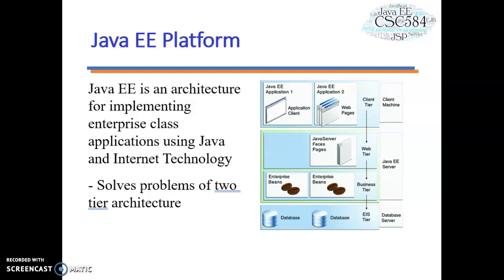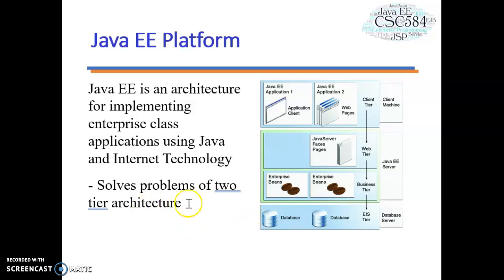The features that make enterprise applications powerful, like security and reliability, often make these applications complex. The Java EE platform is designed to reduce the complexity of enterprise application development by providing a development model, API, and runtime environment that allow developers to concentrate on functionality. Basically, it will solve the two-tier architecture problem.